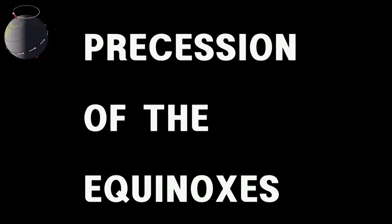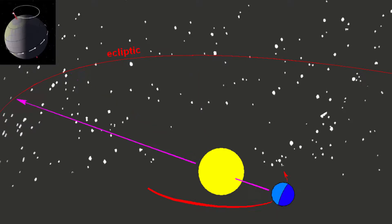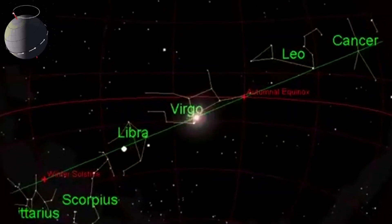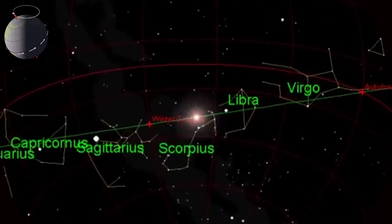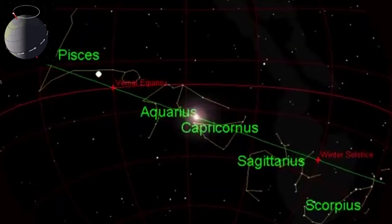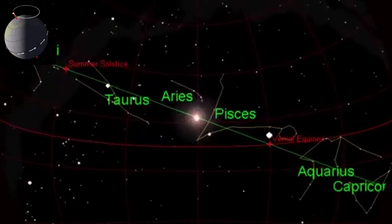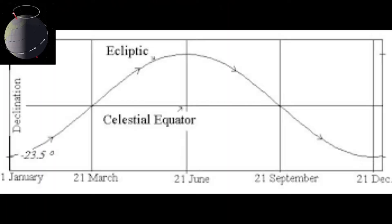So, what is precession of the equinoxes? The path the sun takes when it moves around the Earth is called the ecliptic. Throughout the year, the sun will rise in each constellation until it completes a full cycle. If the sun's path is observed from the Earth's reference frame, it appears to move around the Earth in a path which is tilted with respect to the spin axis at 23.5 degrees. This path is called the ecliptic.